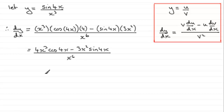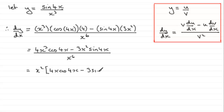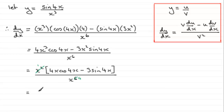I can see a common factor of x squared on the top, so factoring that out with square brackets gives x squared times [4x·cos(4x) minus 3·sin(4x)], all divided by x to the power 6. The x squared cancels into x to the power 6, leaving x to the power 4. So the simplified answer is 4x·cos(4x) minus 3·sin(4x), all divided by x to the power 4.